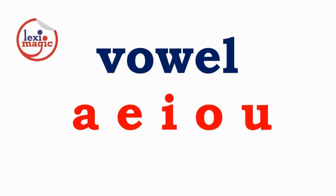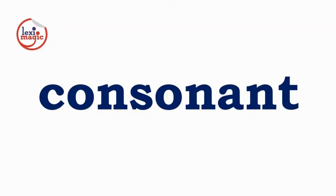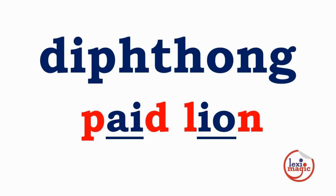Vowel is a speech sound which can be produced continuously by our vocal chords and forms the nucleus of a syllable. These are the vowels in the English alphabet. Consonant is a basic speech sound which has to be combined with a vowel sound in order to be produced by vocal chords. Diphthong is a combination of two vowels.